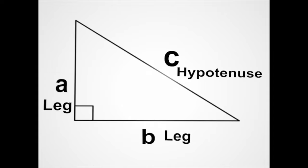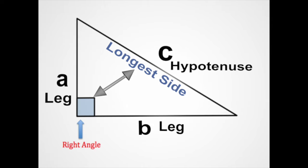It's also important to remember that side c, the hypotenuse, is always the longest side of the right triangle and is directly across from the right angle of the right triangle.